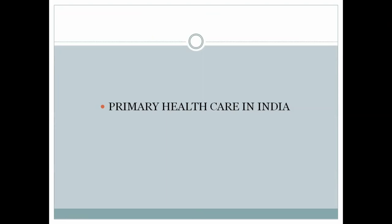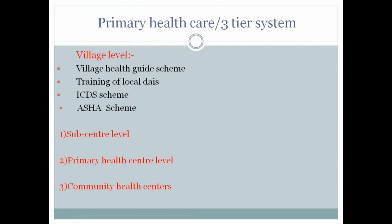A common exam question: what is the three-tier system of primary or rural health care in India? The three tiers are sub-centers, primary health centers, and community health centers. Village-level workers — village health guides, local dais, and ASHA workers — connect people to the sub-centers and primary level of healthcare.